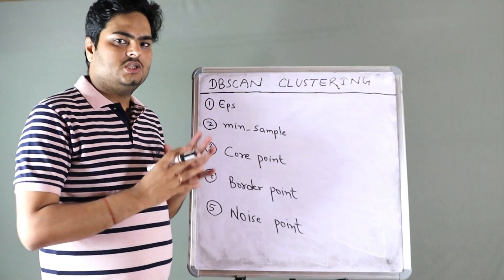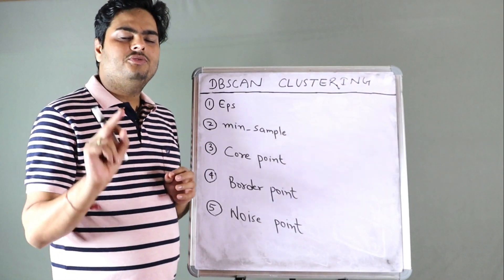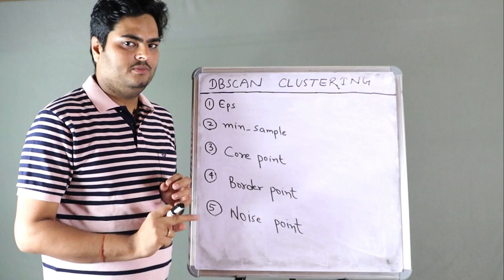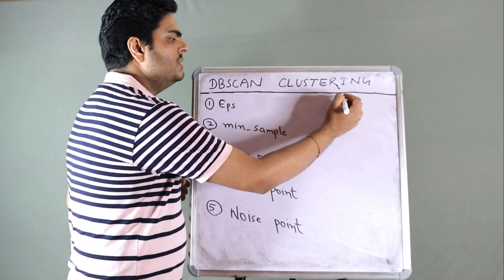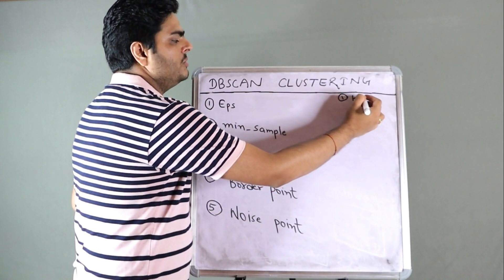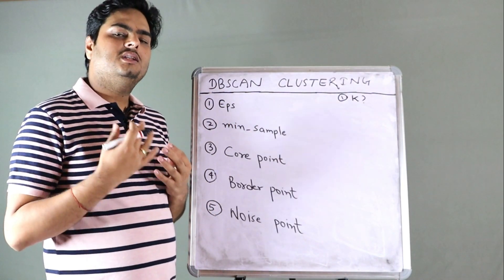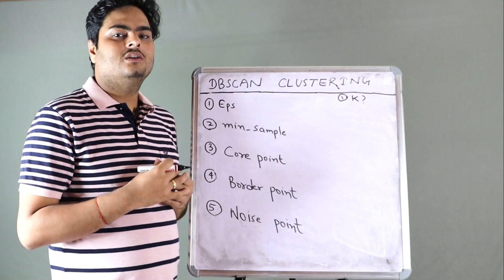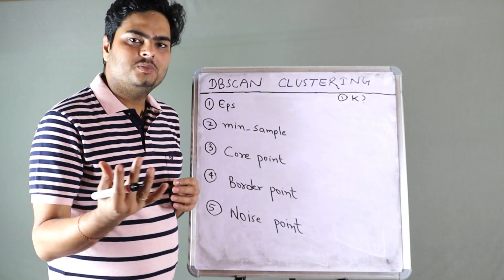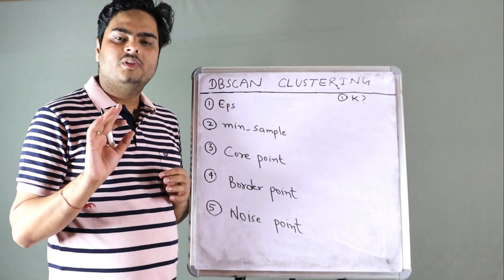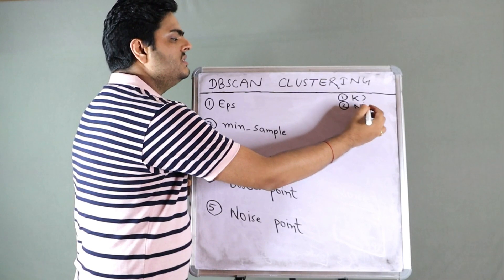First, why is DBSCAN clustering a well-known algorithm? Before that we need to know some of the disadvantages of the famous K-means algorithm. Disadvantage number one: how do you decide the optimal number of K in advance? In K-means clustering we need to know how many clusters we want in advance, which is not always easy. There are ways like the elbow method or subject matter expert help, but it's not always straightforward.